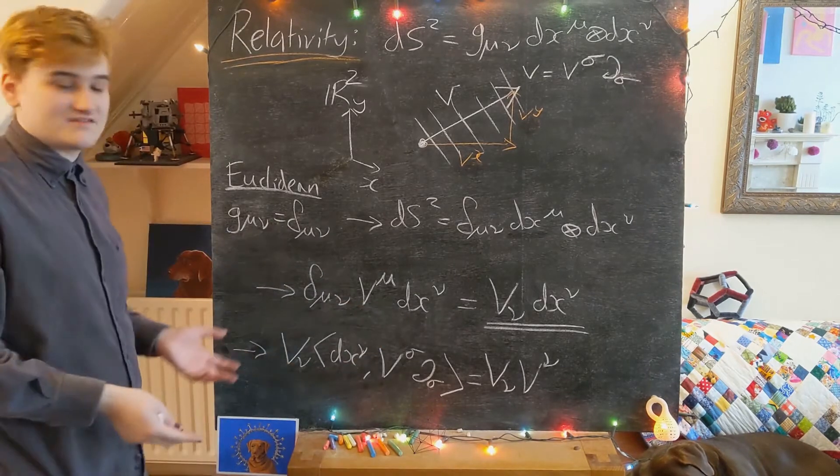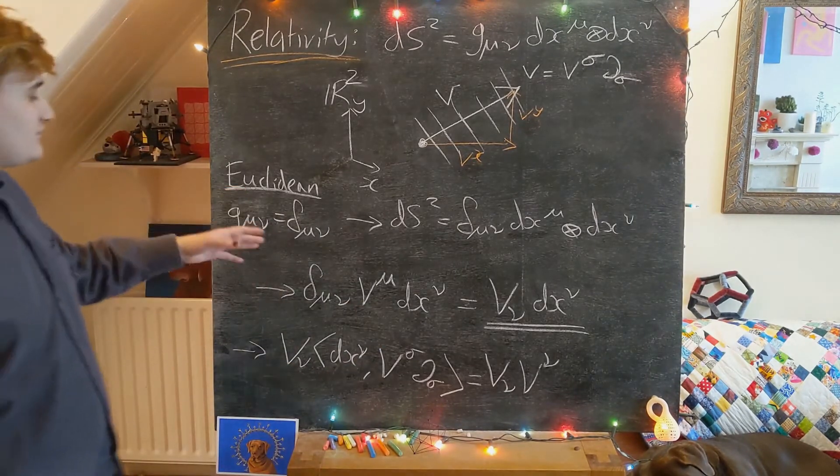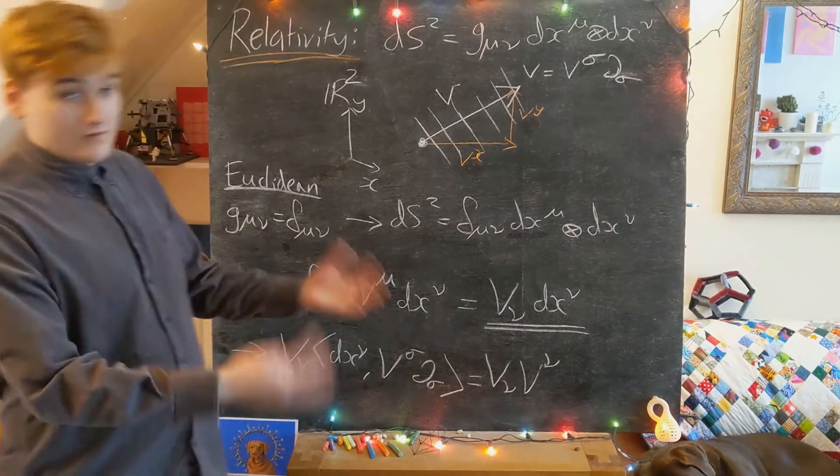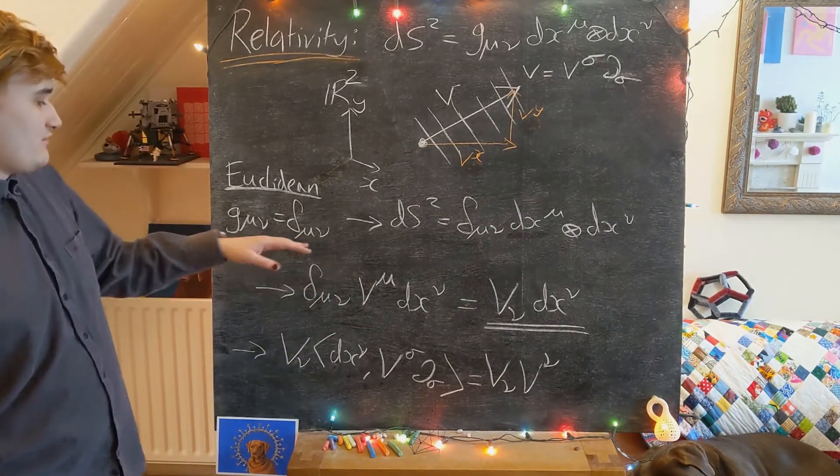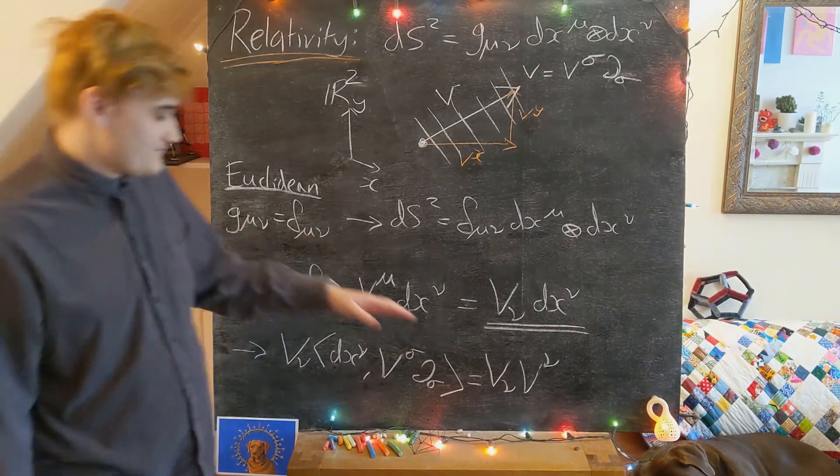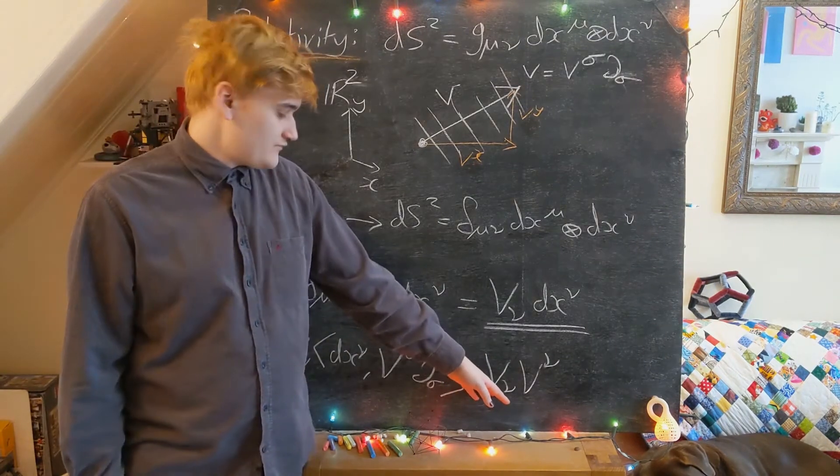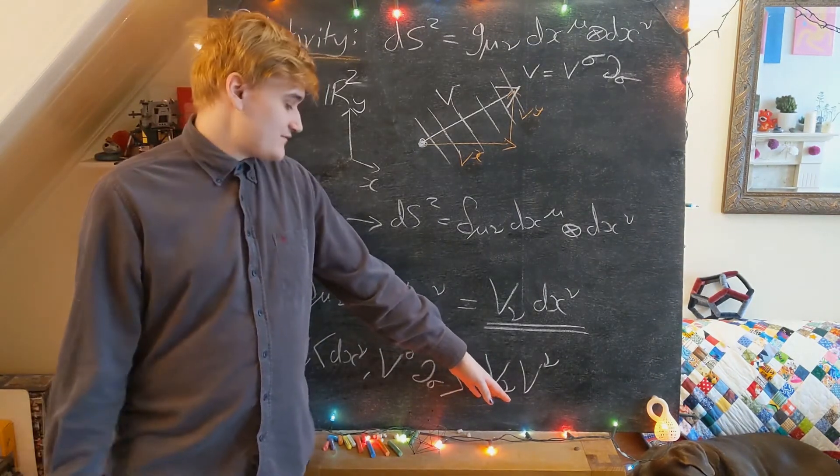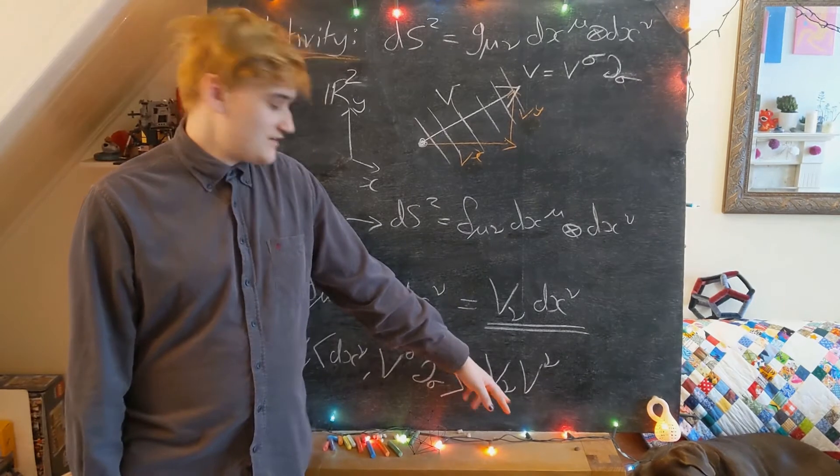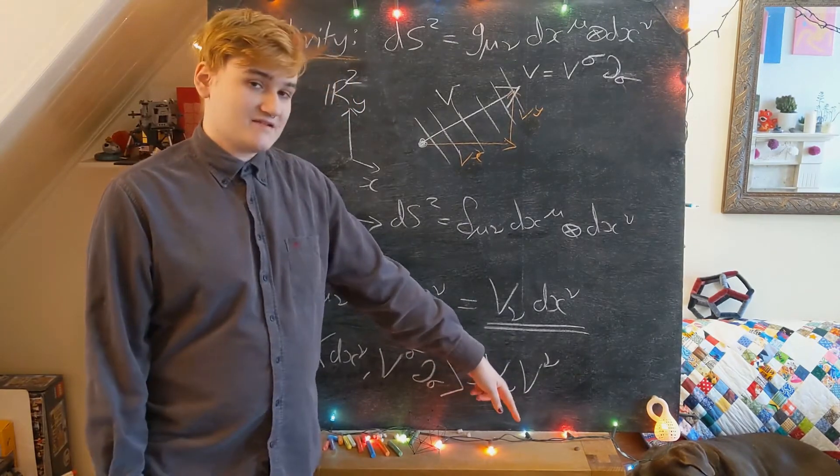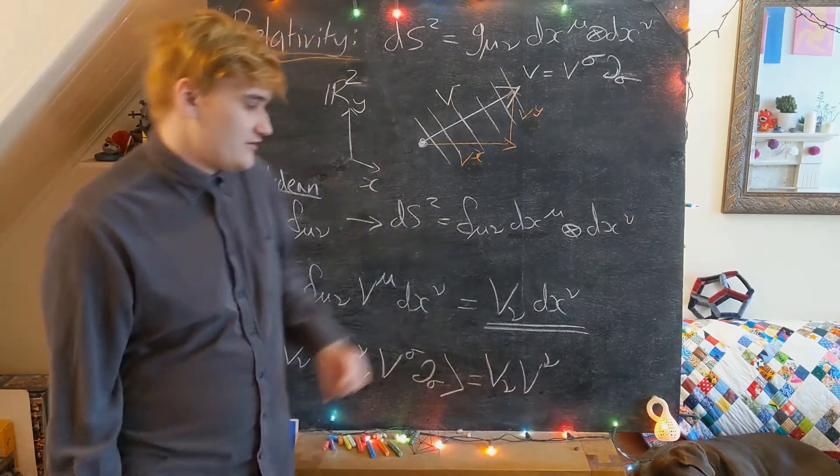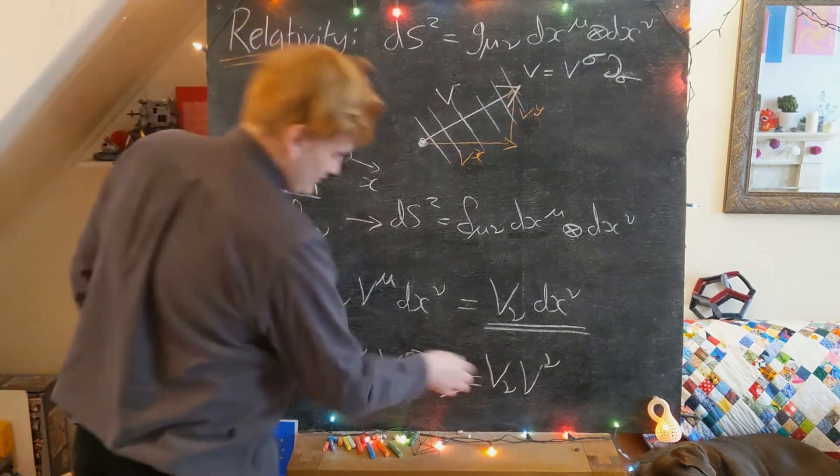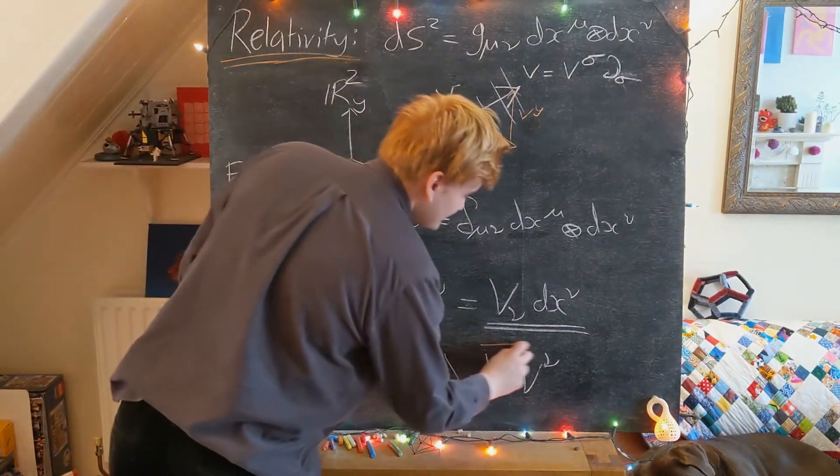Essentially, when you insert two copies of the vector into the Euclidean metric, it turns one set of components into one-form components, and then you just contract the one-form components with the vector components. And so now what this expression here is doing is just plugging the vector into the one-form version of itself.